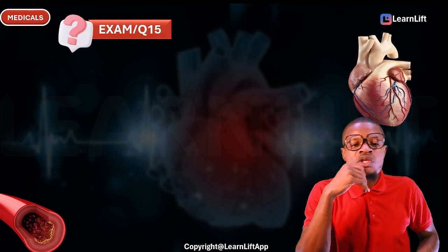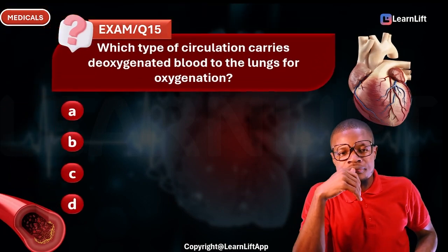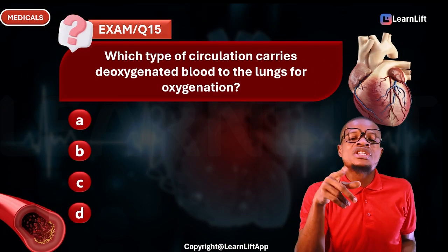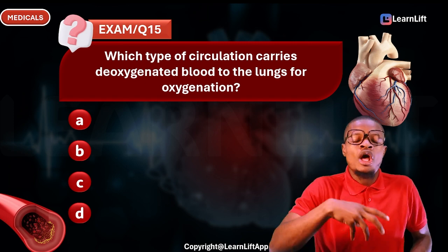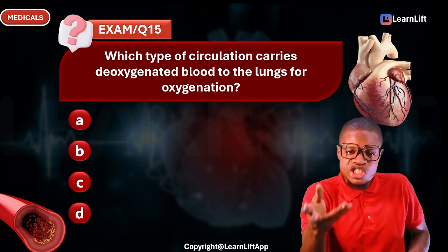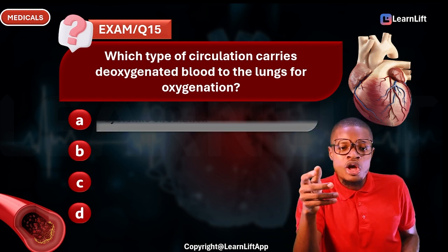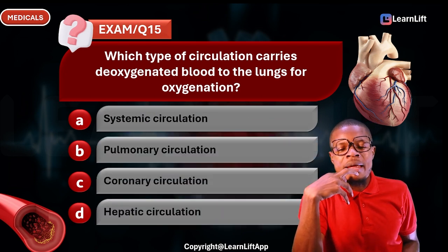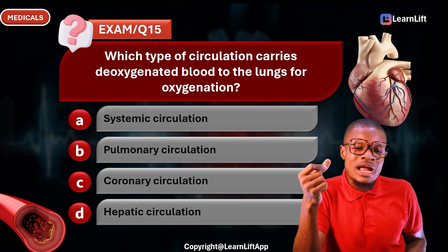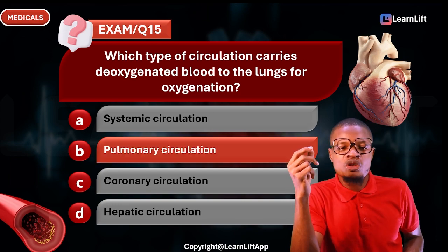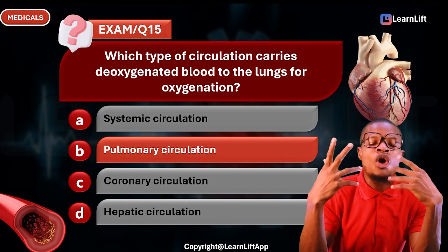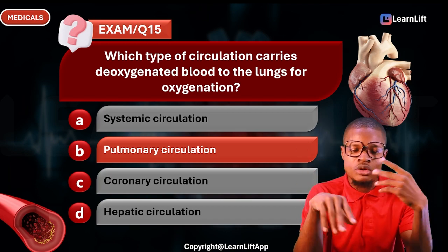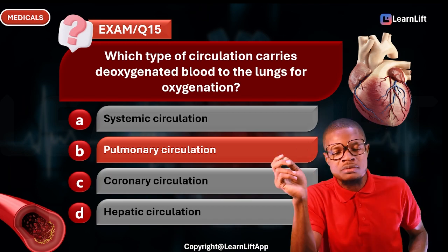Question fifteen: Which type of circulation carries deoxygenated blood to the lungs for oxygenation? Options are systemic circulation, pulmonary circulation, coronary circulation, and hepatic circulation. The correct answer is pulmonary circulation. Systemic circulation carries oxygenated blood to the body tissues, and coronary circulation supplies the heart itself.